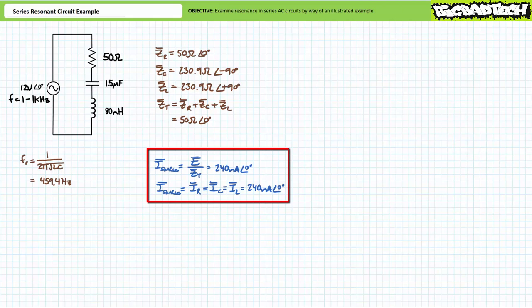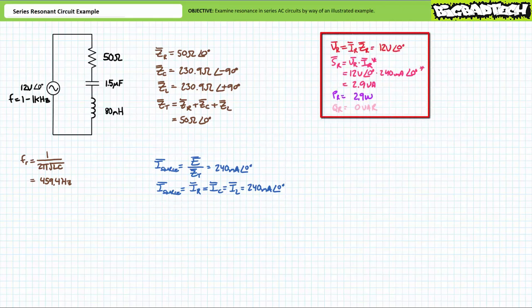Given this is a series circuit, 240 milliamperes at an angle of zero degrees flows through all three elements forming the series connection. IR equals 240 milliamperes at an angle of zero degrees, as does IC and IL. An application of Ohm's law demonstrates voltage across the resistor will be equal to the current through it times the resistive impedance. Substituting our given values gives VR to be 12 volts at an angle of zero degrees. At conditions of resonance, all of the supply voltage appears to be dropped across the resistor.